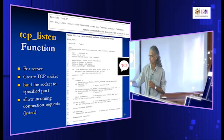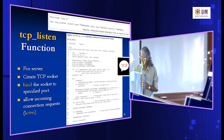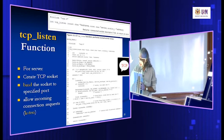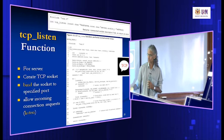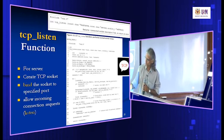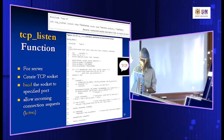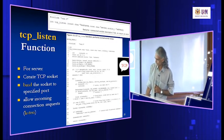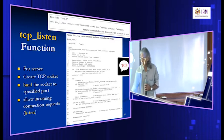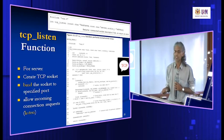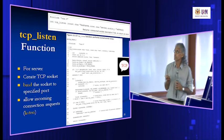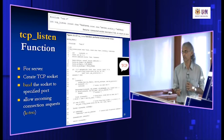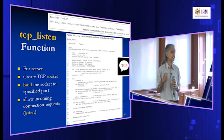If socket creation or bind fails, we try the next socket structure in the result. Once both socket creation and bind succeed, we start the listening process. At the end, we call freeAddressInfo to release memory, and return the socket which has already started the listening process. The TCP listen function returns a bound, listening socket to the main program — it's already in listening mode, waiting to accept communication from client programs.